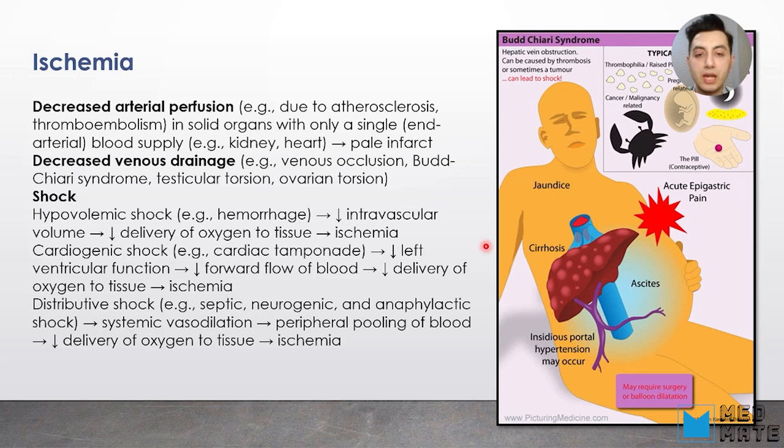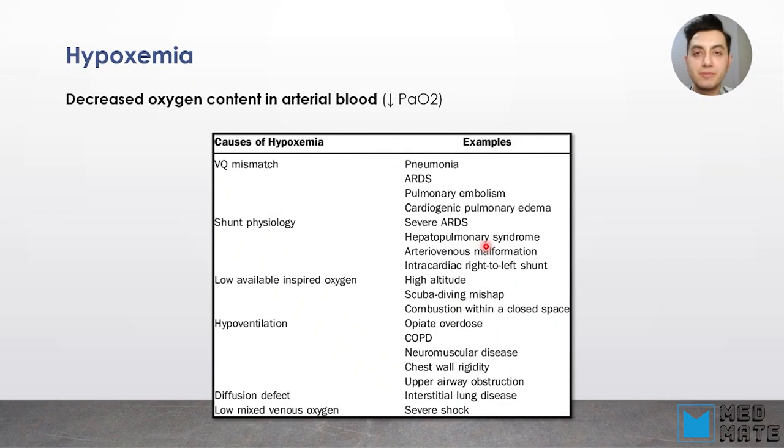Another type of shock is distributive shock, which can be caused by septic, neurogenic, or anaphylactic shock. This is when there is systemic vasodilation, then peripheral pooling of blood occurs, and delivery of oxygen to certain tissues decreases, leading to ischemia in specific tissues.